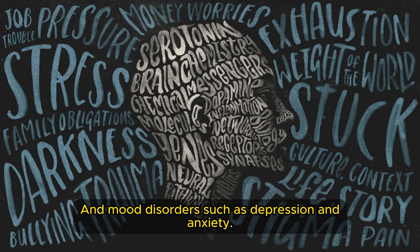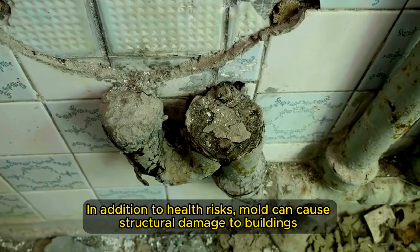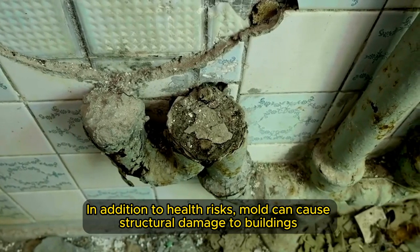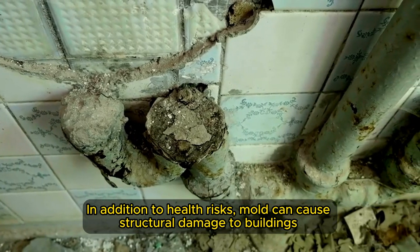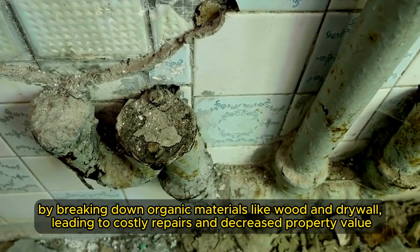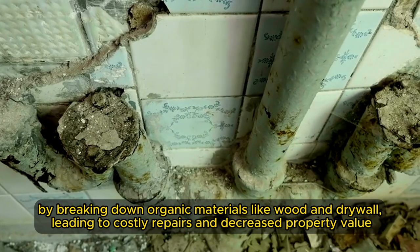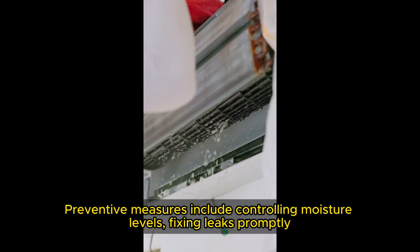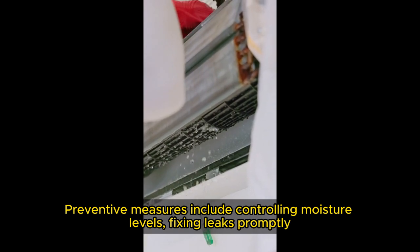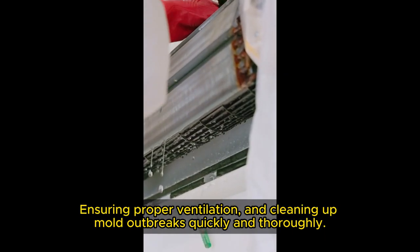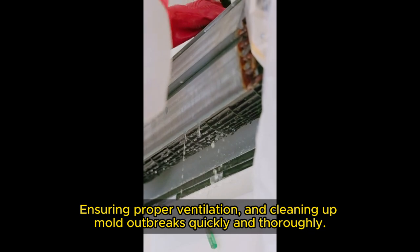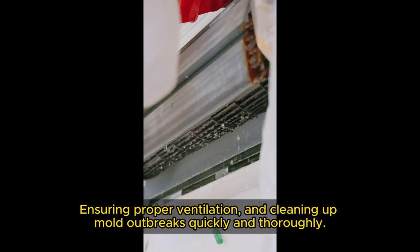In addition to health risks, mold can cause structural damage to buildings by breaking down organic materials like wood and drywall, leading to costly repairs and decreased property value. Preventive measures include controlling moisture levels, fixing leaks promptly, ensuring proper ventilation, and cleaning up mold outbreaks quickly and thoroughly.